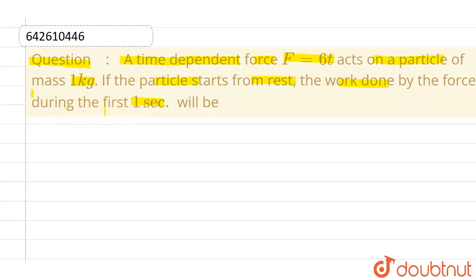Now what we are given is a force which is dependent on time, which is given as 6t. Now we know that force can also be written as mass into acceleration, F equals ma.